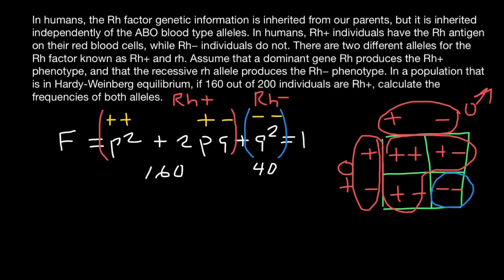So now we need to convert them into frequencies. So 40 divided by 200, the total number of people, would give us 0.2. And this is going to be the frequency of the Rh negative phenotype.